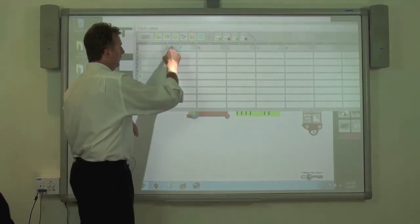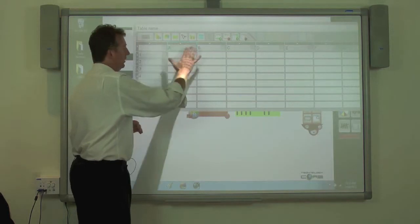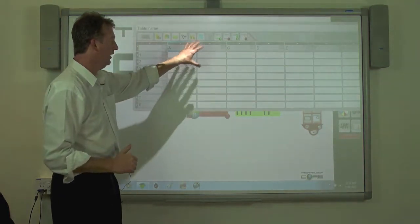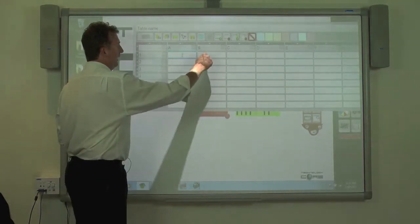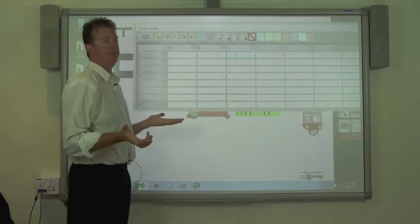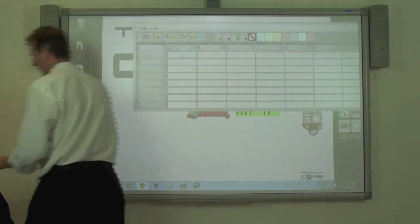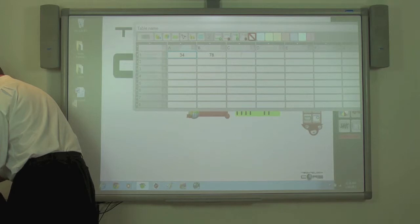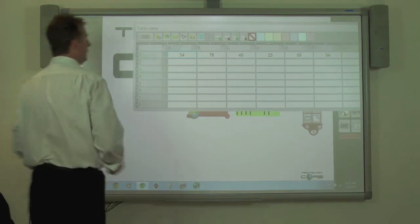So what we can do is change the title of each of those columns if we want, and then we just populate these with numbers. So I'll just quickly put in a couple of numbers.